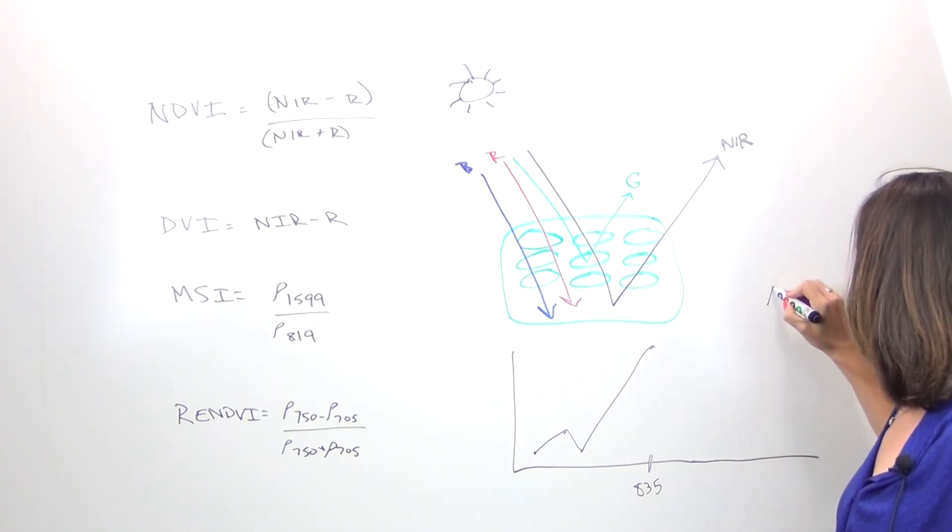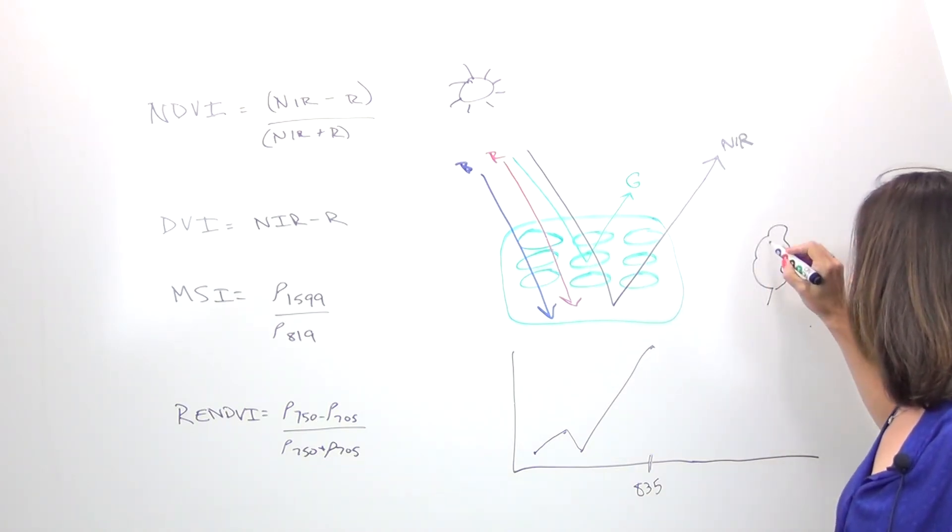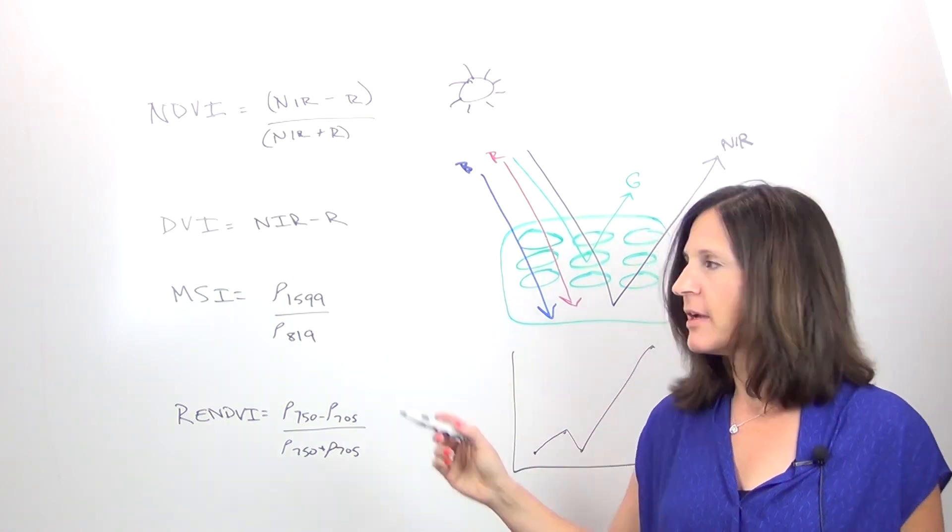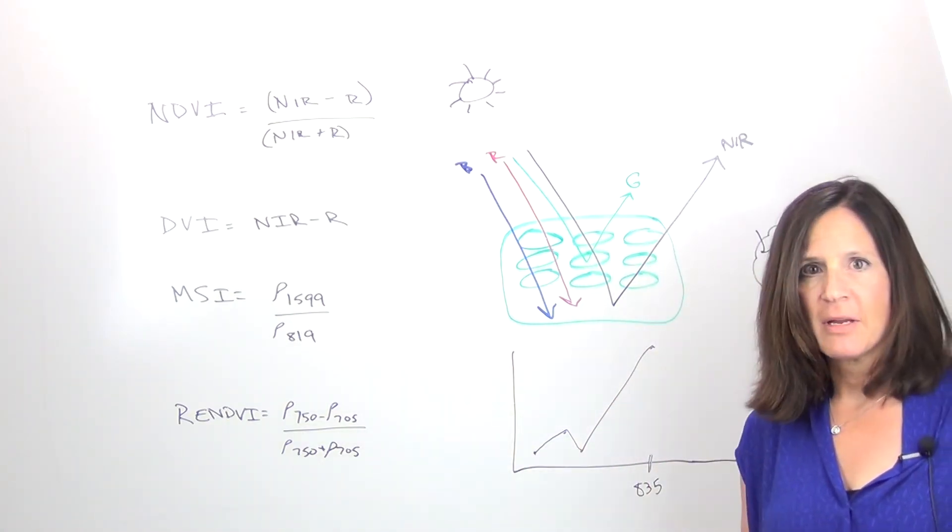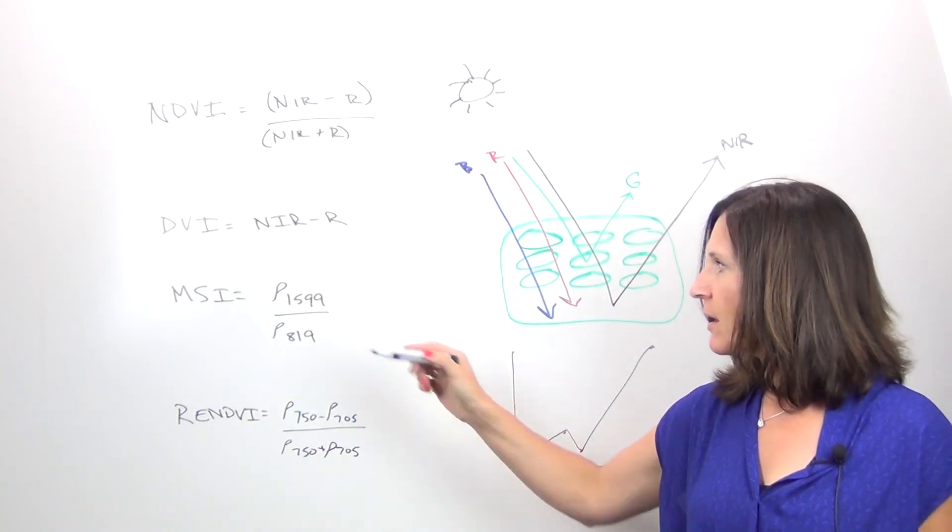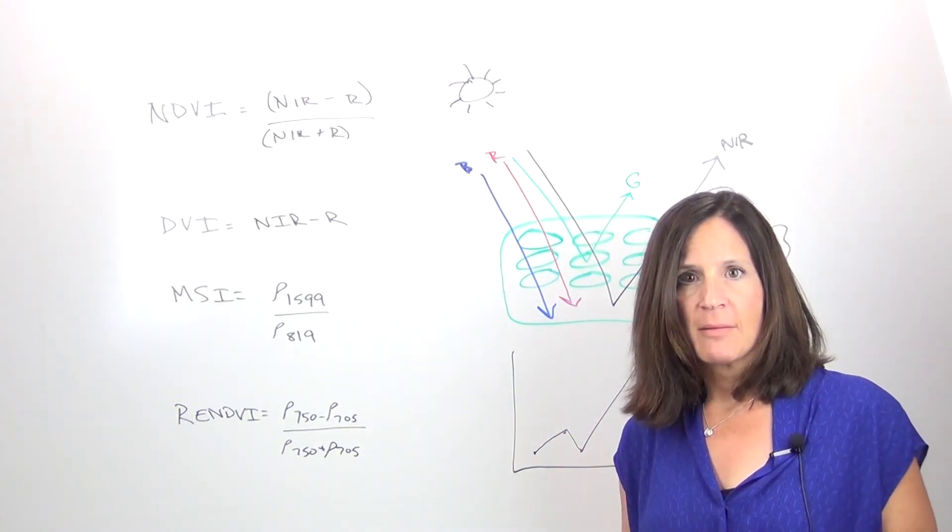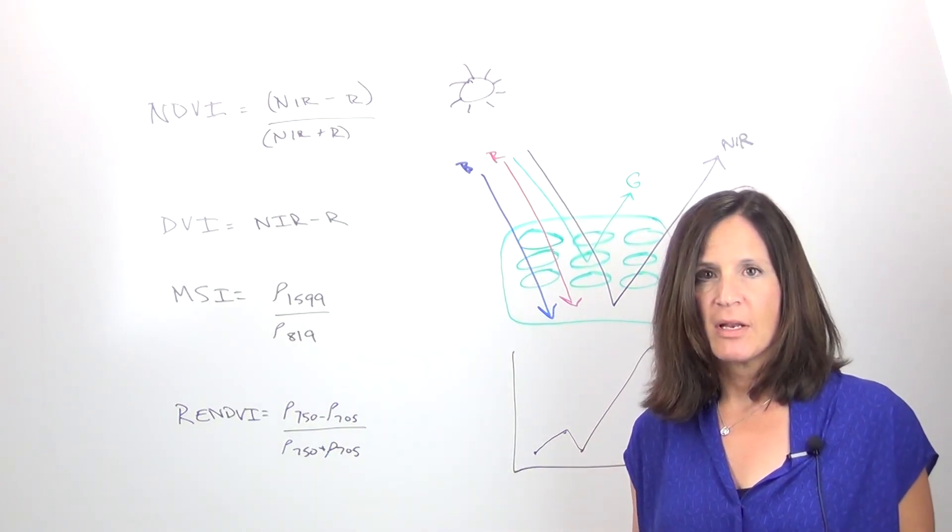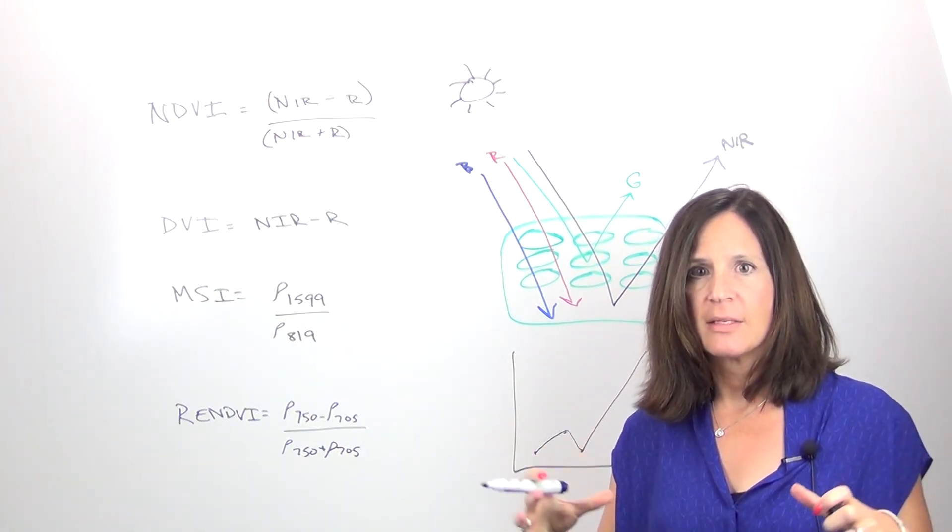And when the canopy, your plant, is holding a lot of moisture, the absorption values greatly increase around 1599 nanometers. When using 819 nanometer spectral reference, you can start to see some changes when you get a lot of canopy water content increase. And this index is really good to use for that.